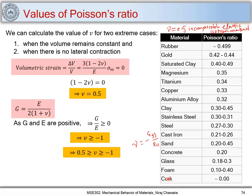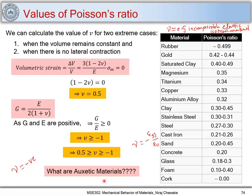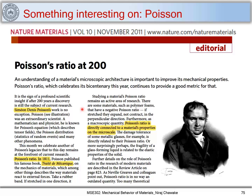There are materials which show a negative Poisson's ratio — those are called auxetic materials. You can search for what auxetic materials are, how they behave, and why they show a negative Poisson's ratio. There is an interesting article titled 'Poisson's Ratio at 200' published in Nature Materials, which came out in 2011 — the bicentenary year celebrating Poisson's ratio, first proposed in 1811 by Simeon Denis Poisson.